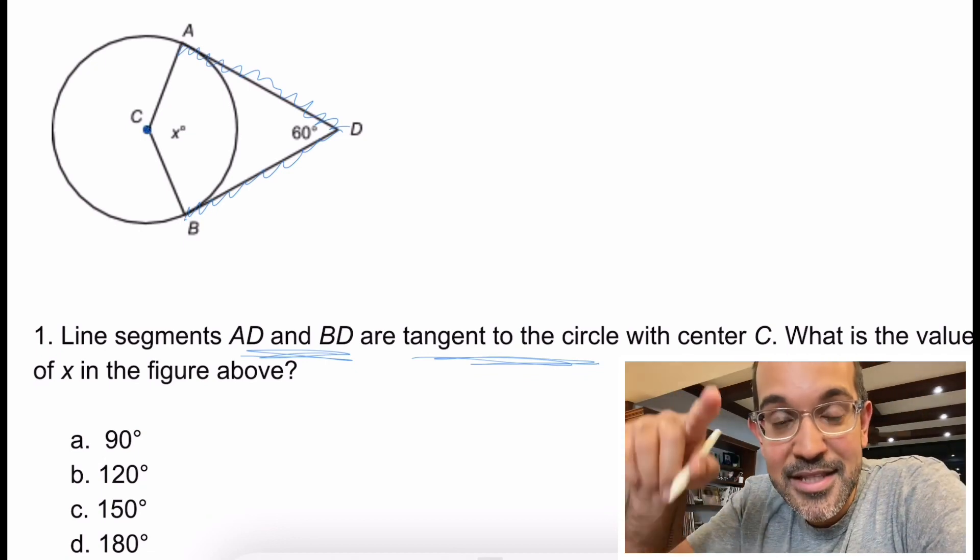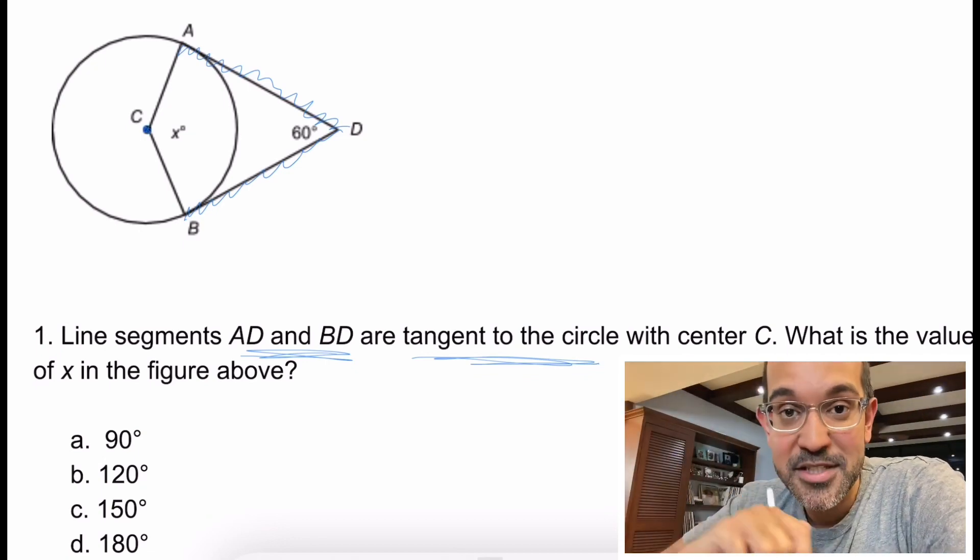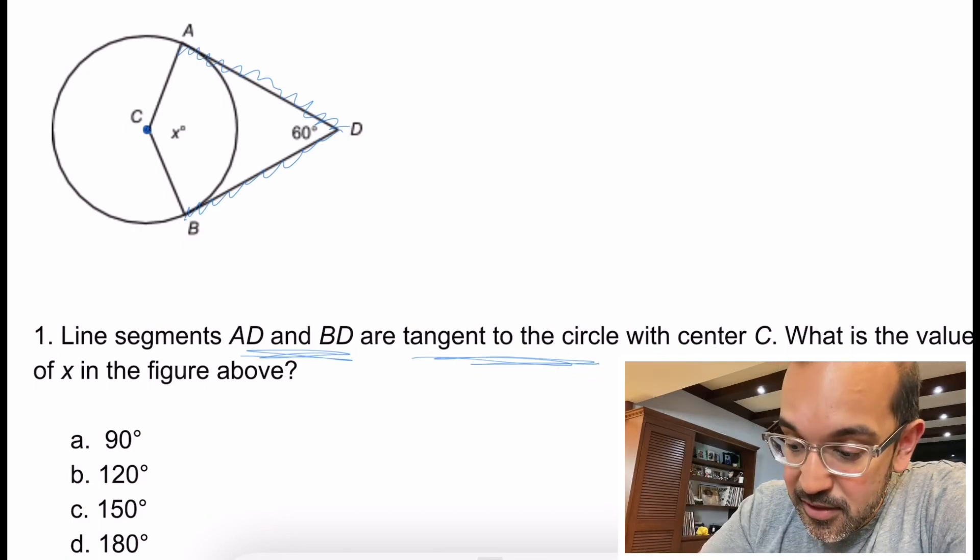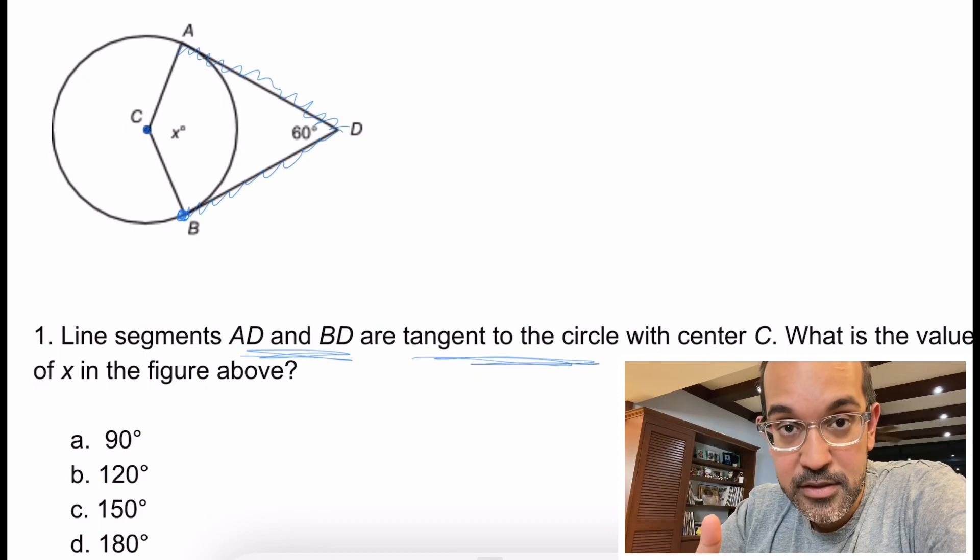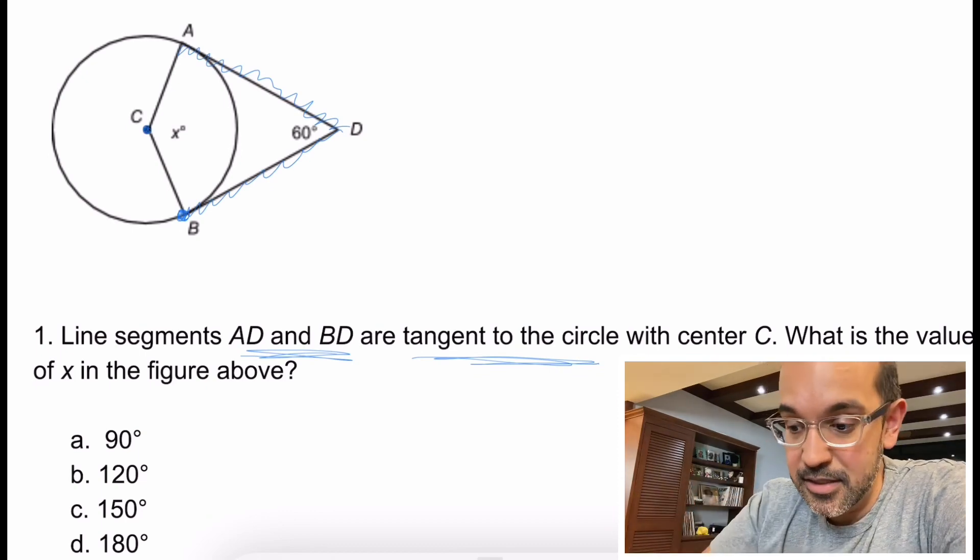Whenever you have a line that's tangent to the circle, there are two things that are happening. The first thing is that this line is only touching the circle at one point. And then the second thing is, so each of these, this is the one point where that line's touching.